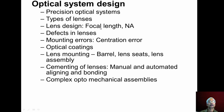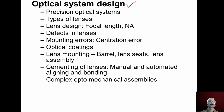With this we close the discussion on AFM and start the discussion on optical system design. Under this topic, we will discuss the requirements of precision optical systems, the different types of optical lenses used, lens design, defects in lenses, mounting errors when lenses are mounted in barrels, different optical coatings, lens mounting arrangements, lens assembly and cementing, manual and automated aligning and mounting processes, and complex optomechanical assemblies.